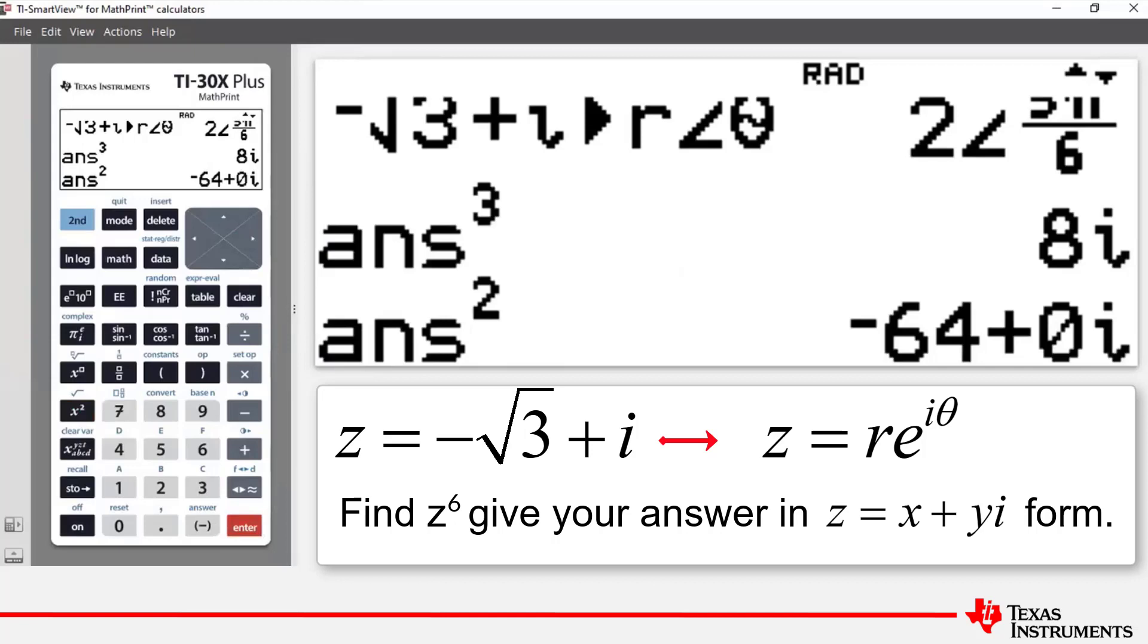You can see also that the calculator adds to that plus 0i. So if z is 2e to the 5 pi i on 6, then z to the 6 is going to be 2 to the 6, which is 64 times e to the 5 pi i. And that's equal to negative 1. And so 64 times negative 1 is negative 64. And that confirms that result there.